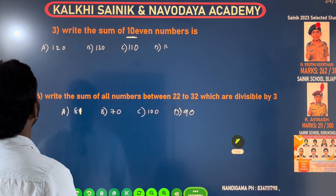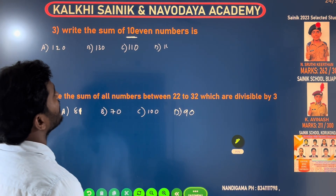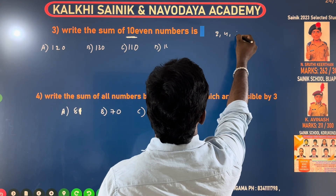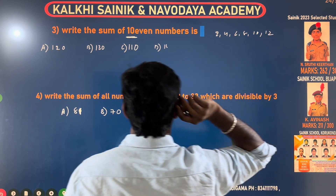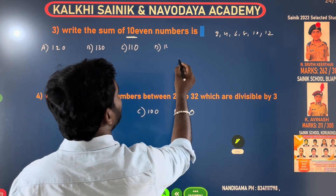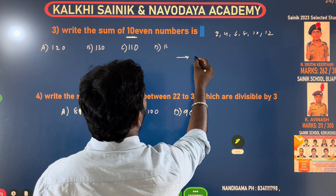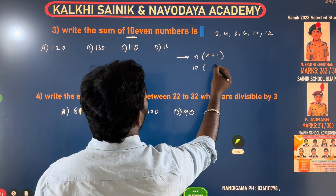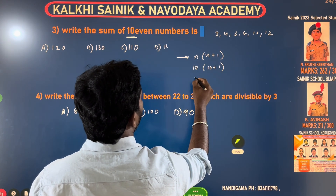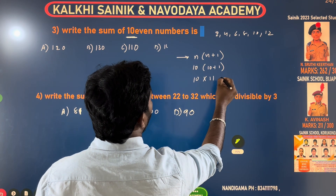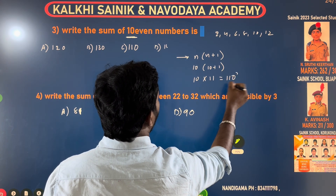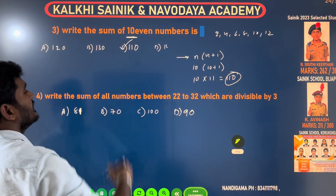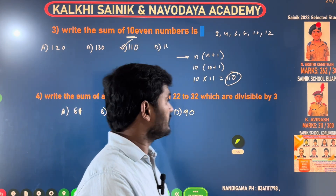Next question: Write the sum of the first 10 even numbers. The even numbers are 2, 4, 6, 8, 10, 12... Using the sum of even numbers formula: N × (N + 1). With N = 10: 10 × (10 + 1) = 10 × 11 = 110. Option C is the right answer.